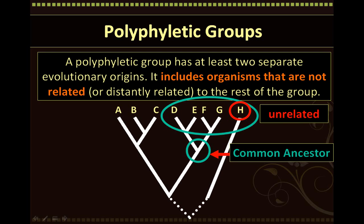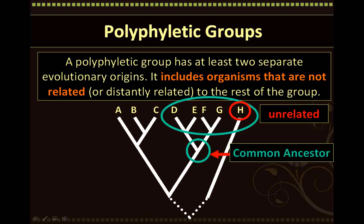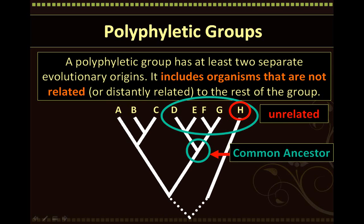The dotted lines at the base of the phylogenetic tree indicate a distant past. So any resemblance between species D, E, F, G and species H is actually due to convergent evolution, as we discussed earlier. Remember Darwin's second big idea, because of which organisms that are only distantly related may appear to be similar — which could be why species H was incorrectly included in this group.